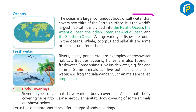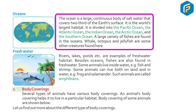The ocean is a large continuous body of salt water that covers two-thirds of the Earth's surface. It is the world's largest habitat, divided into the Pacific Ocean, the Atlantic Ocean, the Indian Ocean, the Arctic Ocean, and the Southern Ocean. A large variety of fishes are found in the oceans. Whales, octopuses, and jellyfish are some other creatures found here.